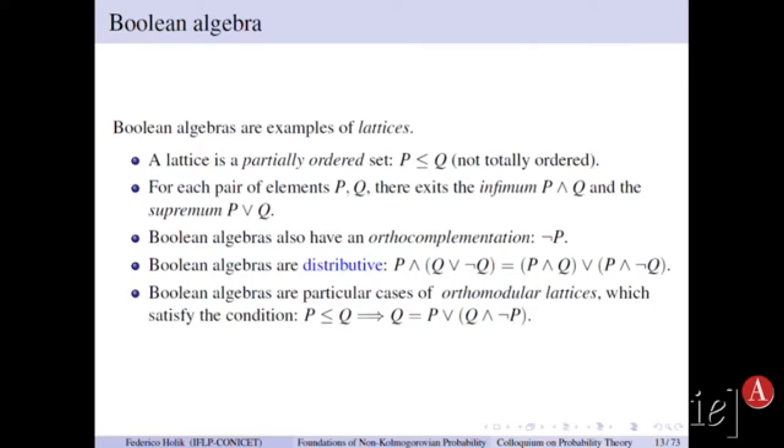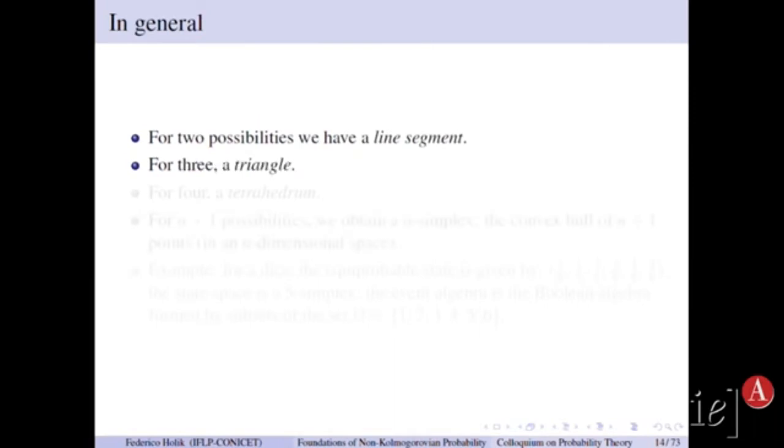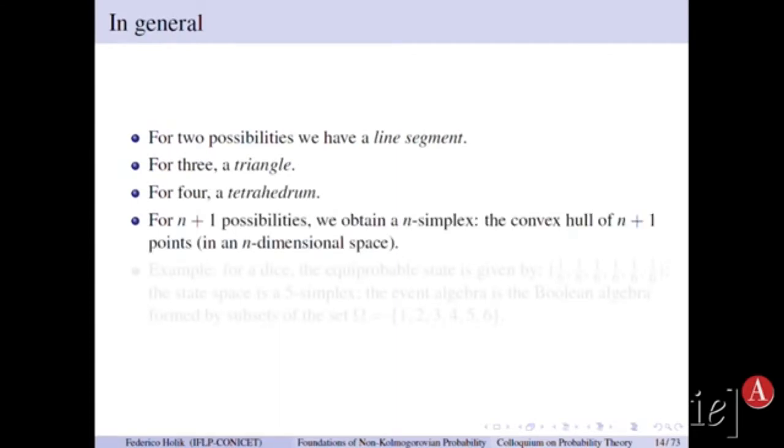And there is an implication associated to the partial order. So for two possibilities we have a line segment. For three, a triangle. If we have four outcomes, we get a tetrahedron and so on.